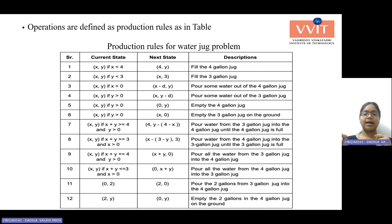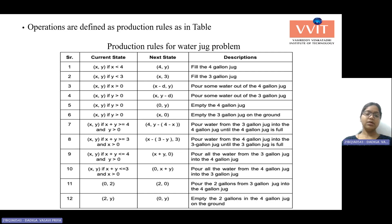If x is greater than 0, we need to pour some water out of the 4-liter water jug. And if y is greater than 0, you can empty the 3-liter gallon jug onto the ground. These are 6 rules to be followed.